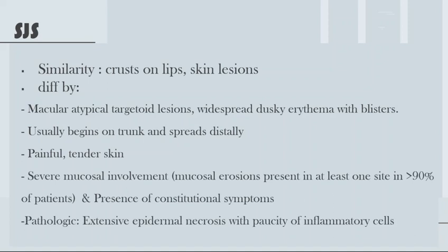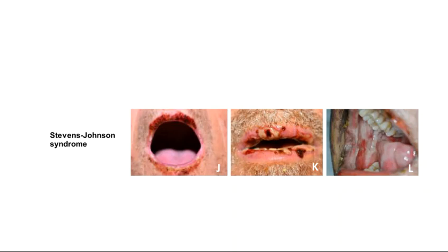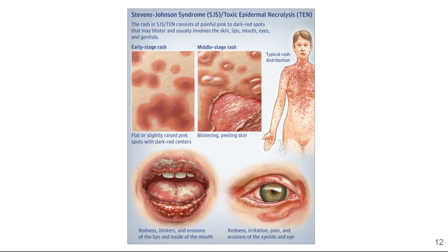Pathologically, you can see subepithelial blistering, extensive epidermal necrosis with a dense inflammatory cell infiltrate. As you can see, this is Stevens-Johnson syndrome.